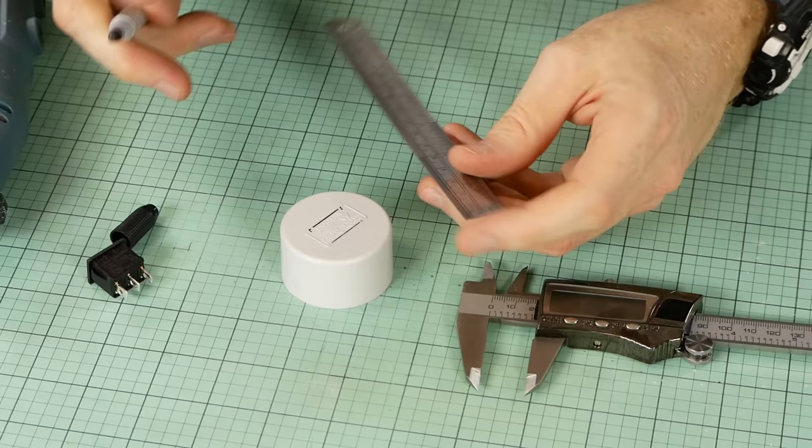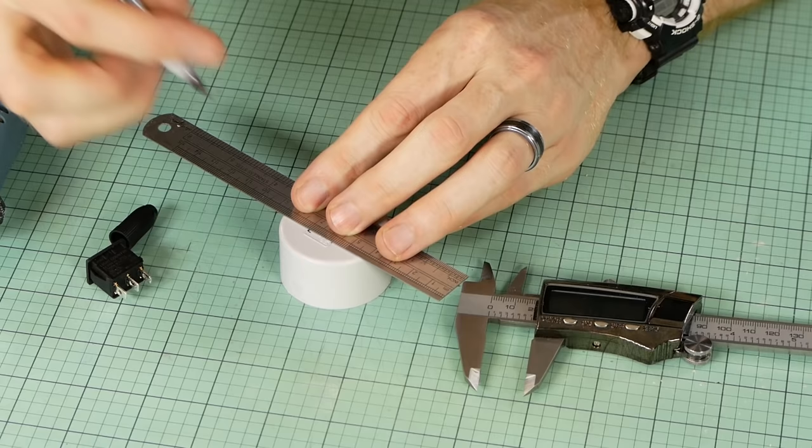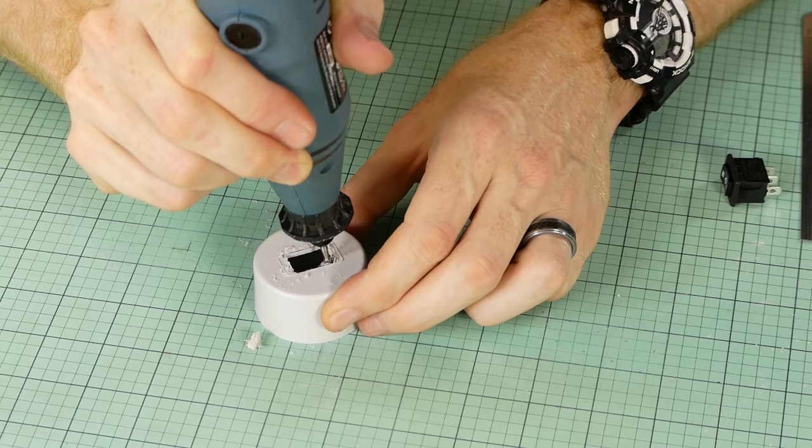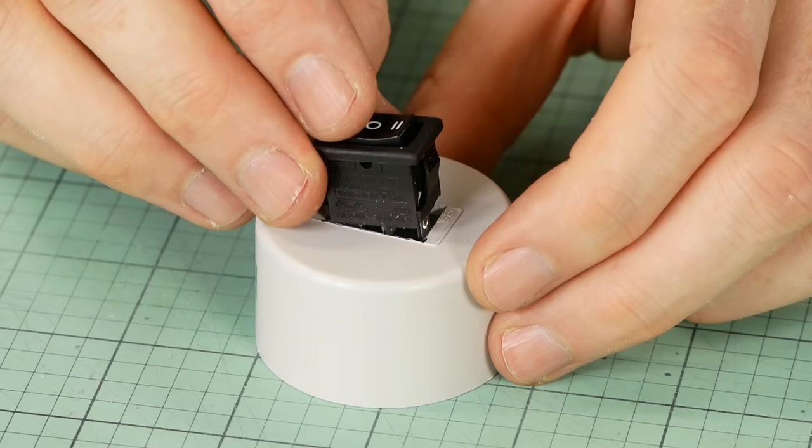The on-off-on rocker switch is a press-type fit. Just measure the size of the switch base, and in the center of the lid mark out its position and carefully cut the hole using the Dremel. You may need to lightly shave the edges and corners with a hobby knife in order to get a nice snug fit.